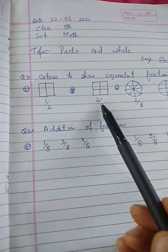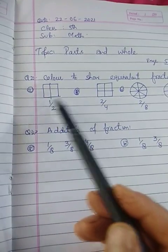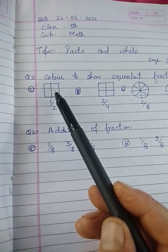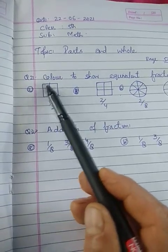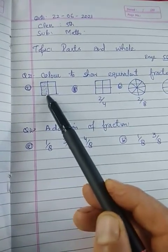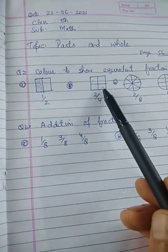To show equivalent fractions, suppose we have one figure that is 1 by 2. The figure is divided into 2, and we have to color one part, so that's 1 by 2.